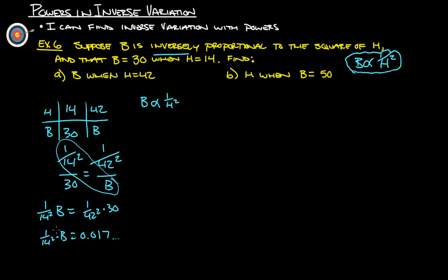Now we want to get B by itself, so we have to multiply both sides by the inverse of this, so that's just 14 squared. If we multiply this side by 14 squared, we're just left with B, and then we've got to multiply this side over here by 14 squared.